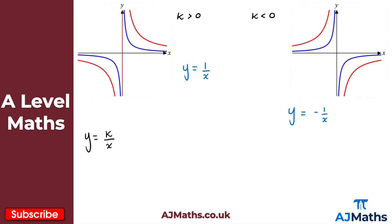For a graph like this, we do have asymptotes to the curve. You can see it's already marked on the diagram — we have an asymptote along the Y-axis. That asymptote is when X is equal to 0. Similarly, we've got one along the X-axis, so when Y is equal to 0.